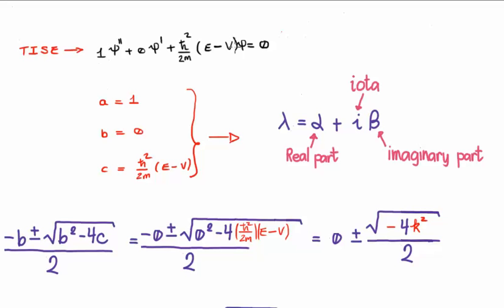So it's written in black at the top of your screen, and we have a function of psi, and we have the second derivative, the first derivative, and the zeroth derivative.